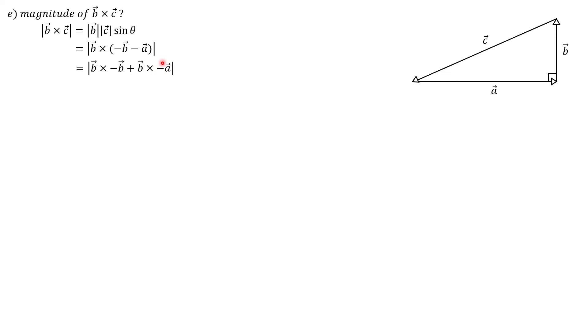And again, we can take out this negative one and put it on the outside. So we're left with the magnitude of negative B cross A. And that right there is equivalent to the magnitude of A cross B. Again, A cross B we found in part A. It's 12. And that is your final answer to part E.